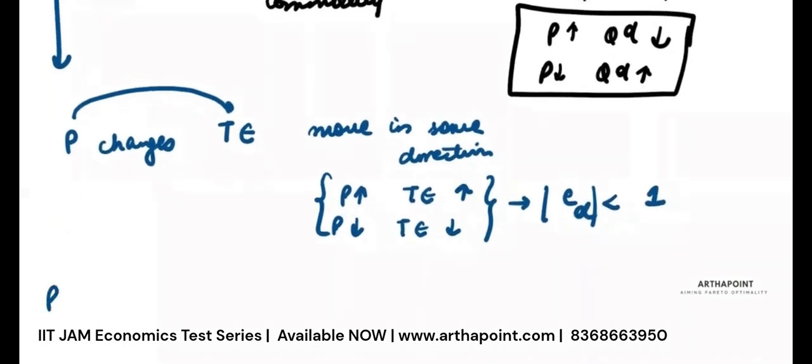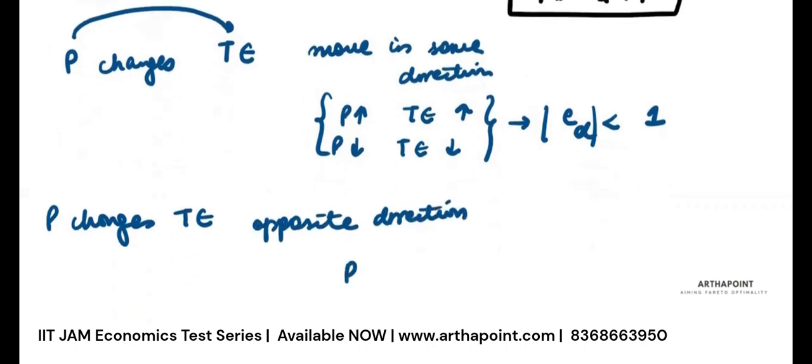When price changes and total expenditure moves in the opposite direction, what does this mean? This means that when price increases, expenditure on the commodity decreases. When price decreases, expenditure on the commodity decreases. Then elasticity of demand in absolute terms is greater than 1.